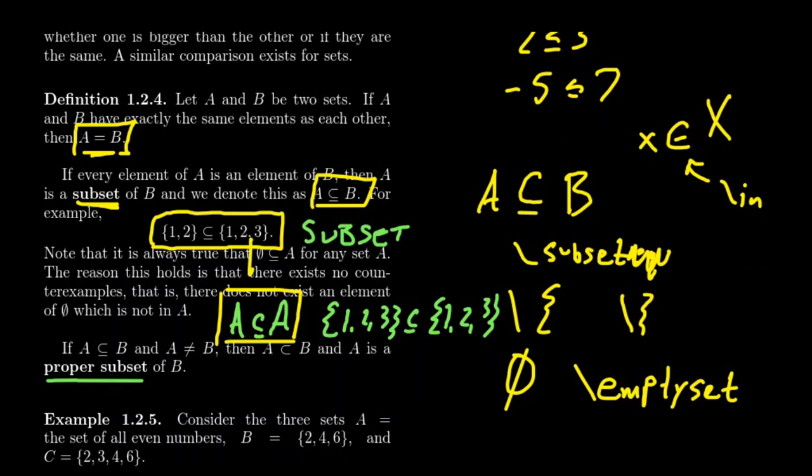I should also mention that the empty set is actually a subset of every set. And this is true because the empty set is vacuously a subset. Because the definition says that every element of the set on the left belongs to the set on the right. Can we find an element in the empty set that's not contained inside set A? Well, the empty set contains nothing, therefore there's no counterexample. There is no element of the empty set that doesn't belong to A, so therefore it's a subset.